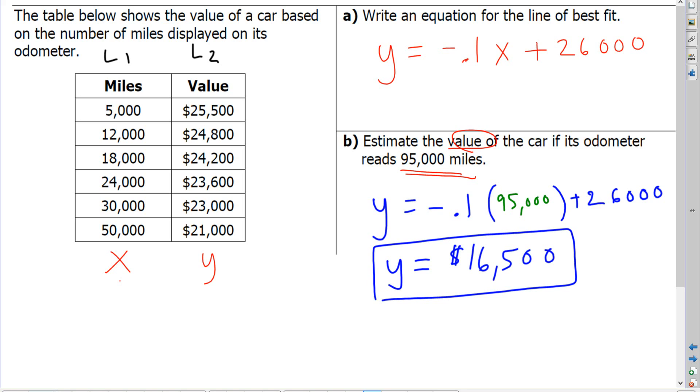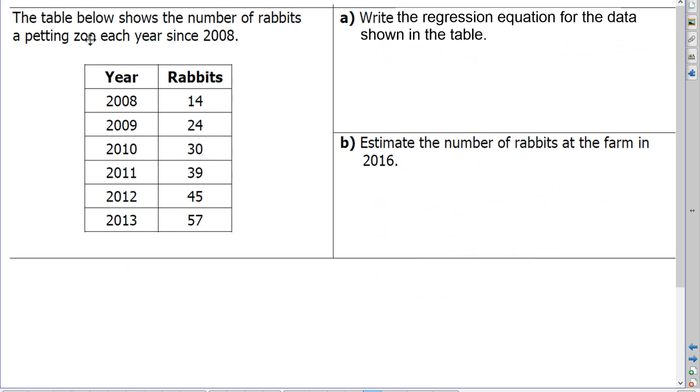So let's take a look at another example. The table below shows the number of rabbits at a petting zoo each year since 2008. Write the regression equation for the data shown in the table, and then estimate the number of rabbits at the farm in 2016. So again, we're going to use our linreg function here to complete part A, and then the equation we create in part A will be used to help us to find the answer for part B.